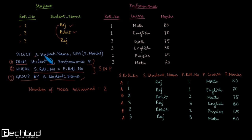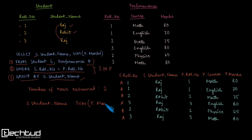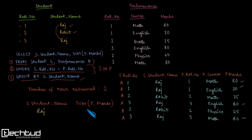After the grouping is done, we extract the student name and the sum of marks for each group. For Group A, the student name is Raj — there are four different rows corresponding to Raj — and summing all their marks gives 310. For Group B, the student name is Rohit and the sum gives 140.